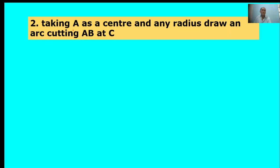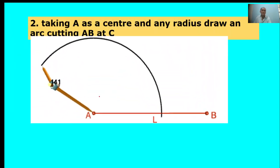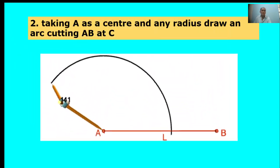Second point: Take A as center and any radius, draw an arc cutting AB at C. Here, center point A, take any radius, draw one arc.